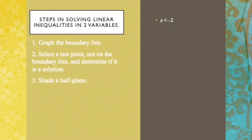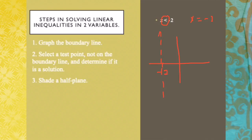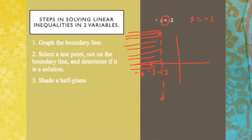Let's take the example x less than negative 2. The boundary line would be x equals negative 2. Sketching the graph, we locate negative 2 on the x-axis. Since the inequality sign is less than, the boundary line is a dotted or broken line. Numbers less than negative 2 are negative 3, negative 4, and so on, so the shaded region is on the left side of the boundary line.